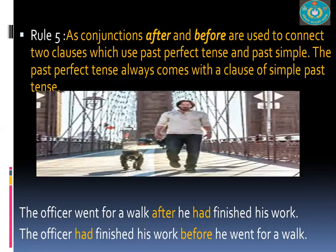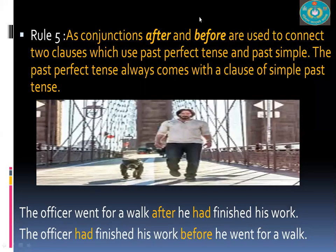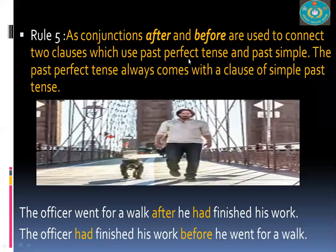The conjunctions 'after' and 'before' connect two clauses using past perfect tense and simple past tense. The past perfect tense always comes with the clause expressing the earlier action. 'The officer went for a walk after he had finished his work.' 'The officer had finished his work before he went for a walk.' The finishing of work happened earlier, so it takes past perfect tense.